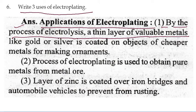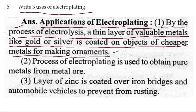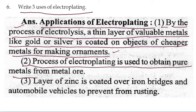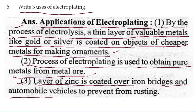Uses of electroplating: first, gold or silver is coated on objects of cheaper metals for making ornaments. Silver or gold polish is applied over cheaper metals like copper or iron. Second, the process of electroplating is used to obtain pure metal from metal ore. Third, a layer of zinc is coated over iron in automobile vehicles to prevent rusting.